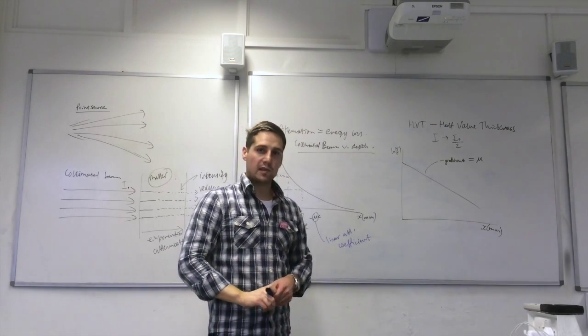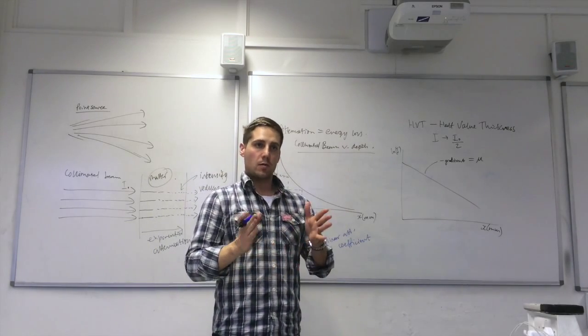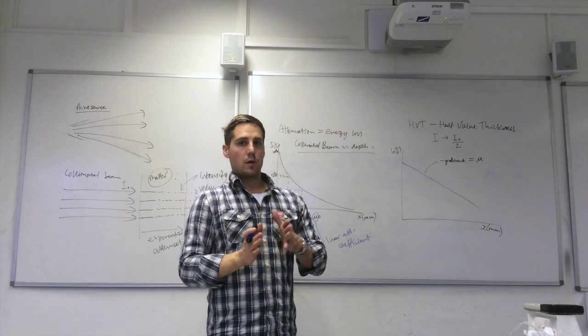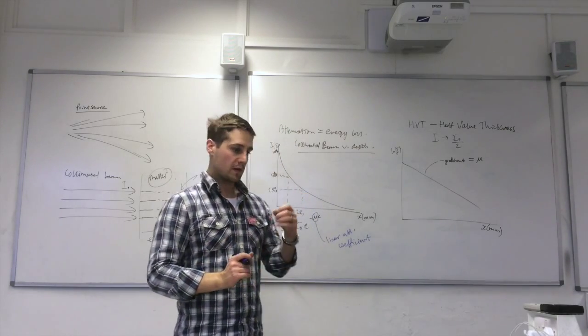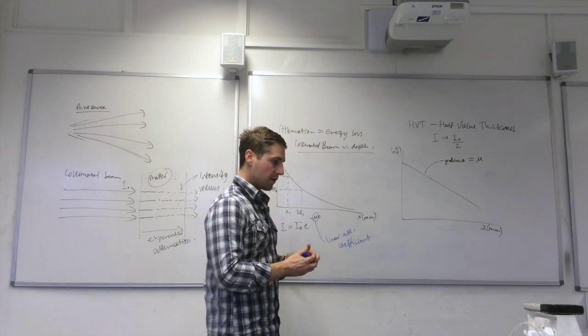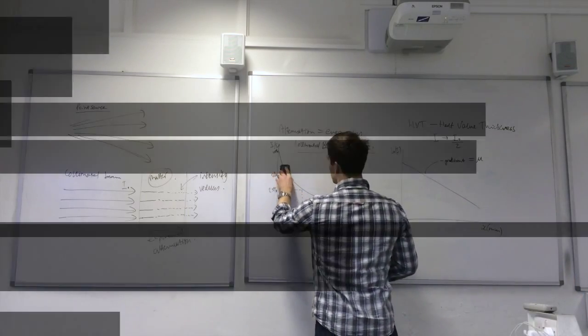Now bone has a smaller half value thickness than soft tissue, so that means that bone will reduce the intensity to 50% with a thinner amount of material, so a smaller depth. So if we plotted two graphs, if I now go back to this graph here.